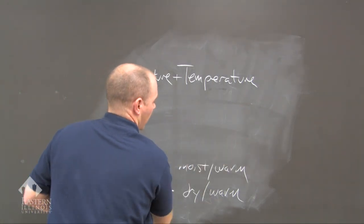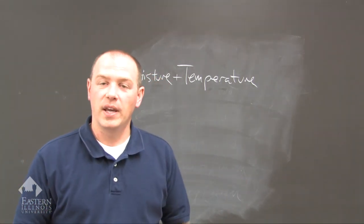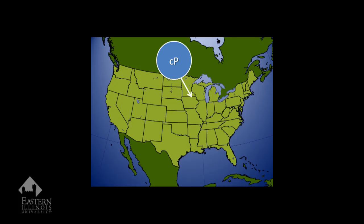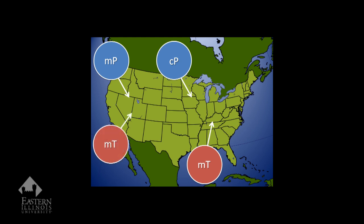Looking at the United States map: the circle in the central portion of Canada is a CP air mass, which moves to the southeast. An MT air mass originates over the Gulf of Mexico and moves to the north or northeast. An MP air mass, indicated by the leading edge of a cold front, originates over the northwest Pacific and moves to the southeast. An MT air mass just southwest of California moves to the northeast, influencing California, Nevada, and Idaho. A CT air mass originates over Mexico and the southern Great Plains, indicated by a dry line front.